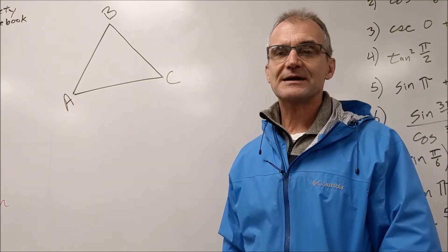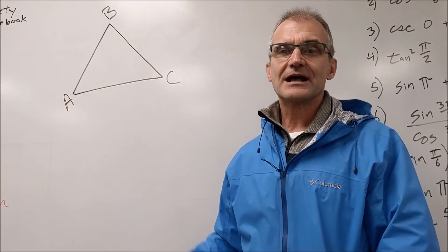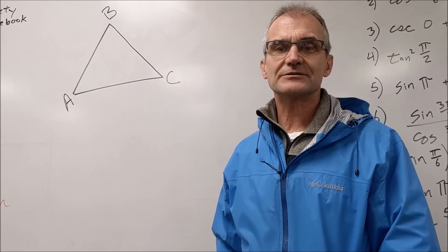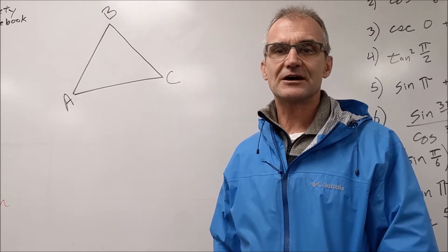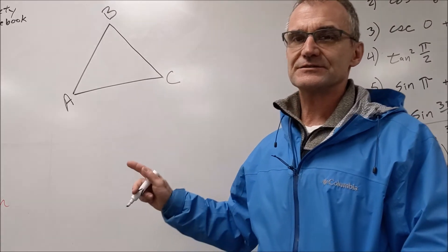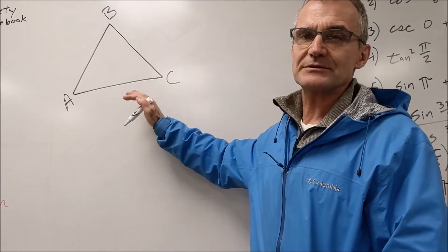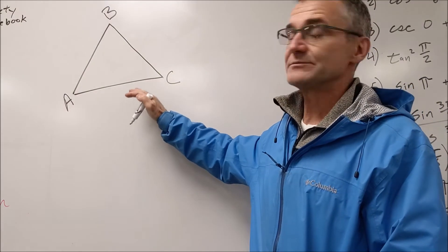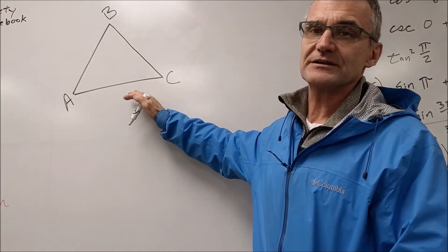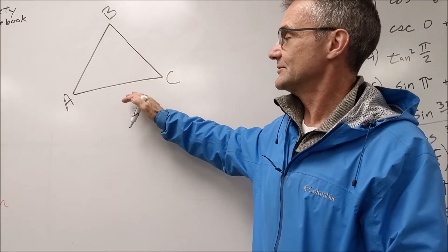Hey, Jonathan here at Colfax Math. In this video, I'm going to go over how to solve a non-right triangle using both the law of sines and the law of cosines. The first thing to start with is labeling the triangle. A capital letter is always a measure of an angle, and a lowercase letter is the length of a side opposite that angle.